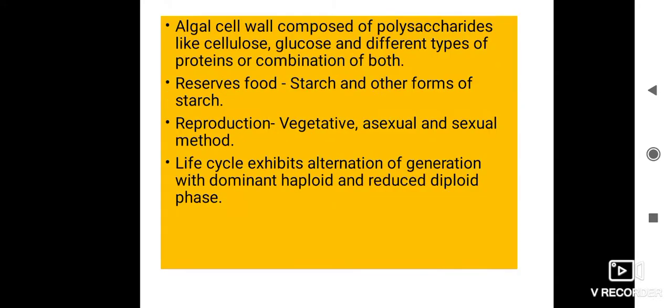The algal cell wall is the wall of the cell, and it is composed of polysaccharides — these are carbohydrates like cellulose, which is insoluble in water, so it can protect the outer wall of the cell and the inner matter of the cell. In some algae, the cell wall is made up of a combination of both polysaccharides and proteins.